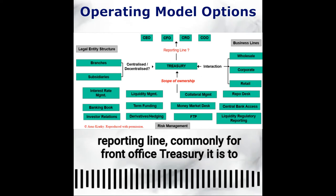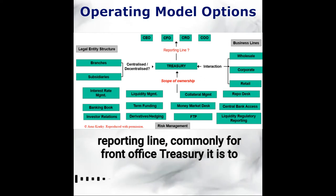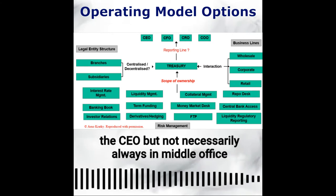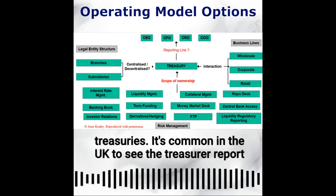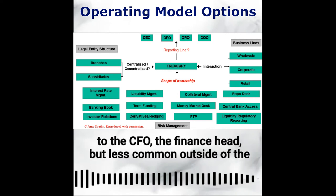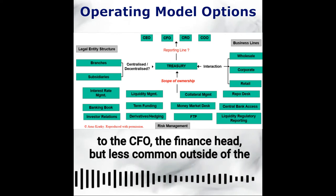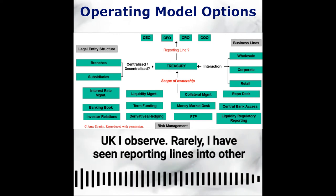What's the reporting line? Commonly for front office treasury, it is to the CEO. But in middle office treasuries, it's common in the UK to see the treasury report to the CFO — the finance head — but less common outside of the UK.